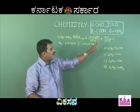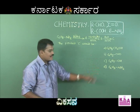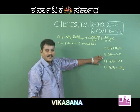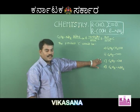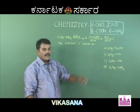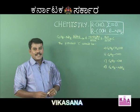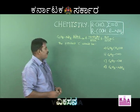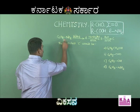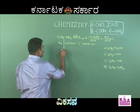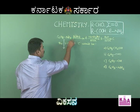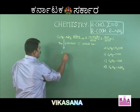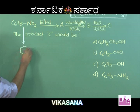The options are: benzyl alcohol, benzaldehyde, phenol, and aniline. Nitrobenzene, when reduced in the presence of iron and HCl, gives compound A — which should be aniline (C₆H₅NH₂).